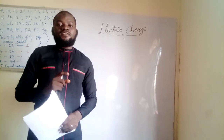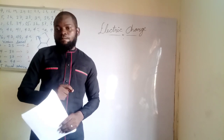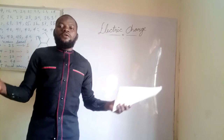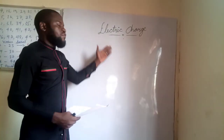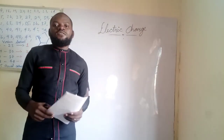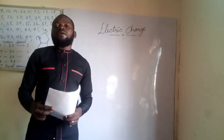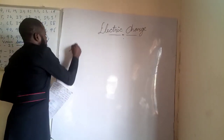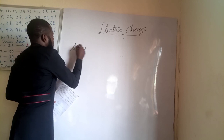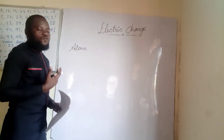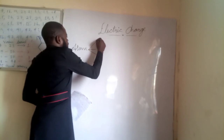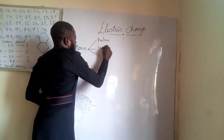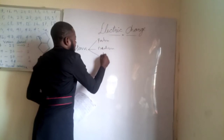We are going to take electricity from scratch to the peak. There's no way we can talk about electricity without talking about electric charge. And when you talk about electric charge, we also need to talk about the atom. An atom is made up of three subatomic particles: the proton, the neutron, and the electron.